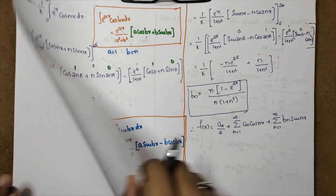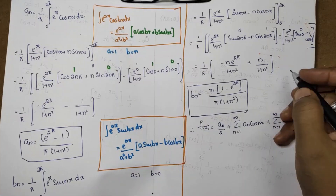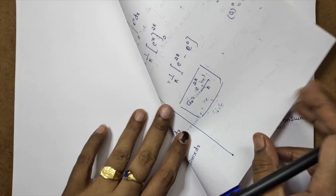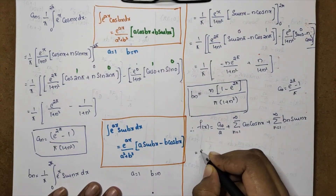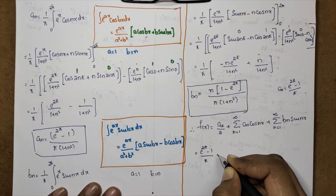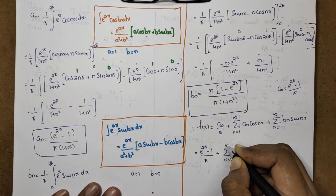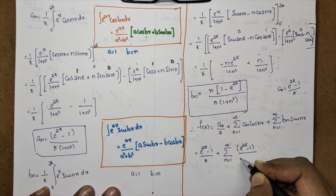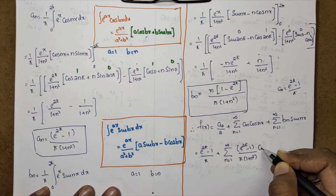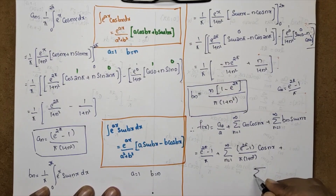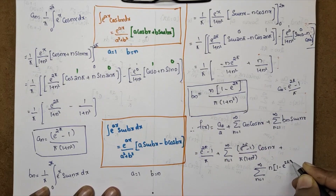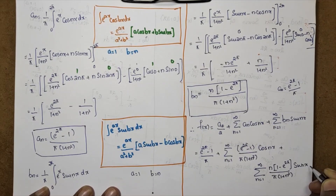Substituting into the Fourier series formula, the final answer is: f(x) equals (e raised to 2π minus 1) by π, plus summation n equal to 1 to infinity (e raised to 2π minus 1) by π(1 + n²) · cos(nx), plus summation n equal to 1 to infinity n(1 minus e raised to 2π) by π(1 + n²) · sin(nx).